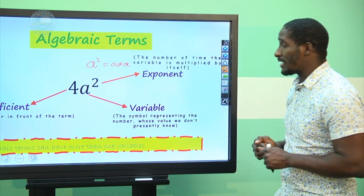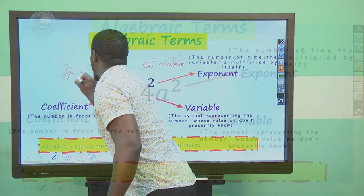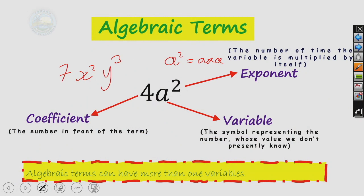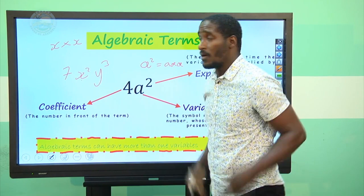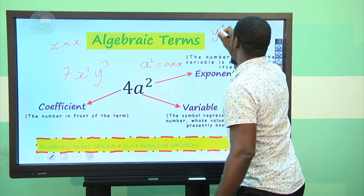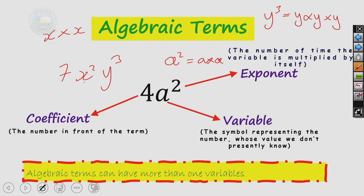Please bear in mind that algebraic terms can have more than one variable. For example, 7x²y³ has two variables: x and y. The exponent on x is 2, meaning x is multiplied by itself 2 times. The exponent on y is 3, meaning y cubed is y multiplied by y multiplied by y.